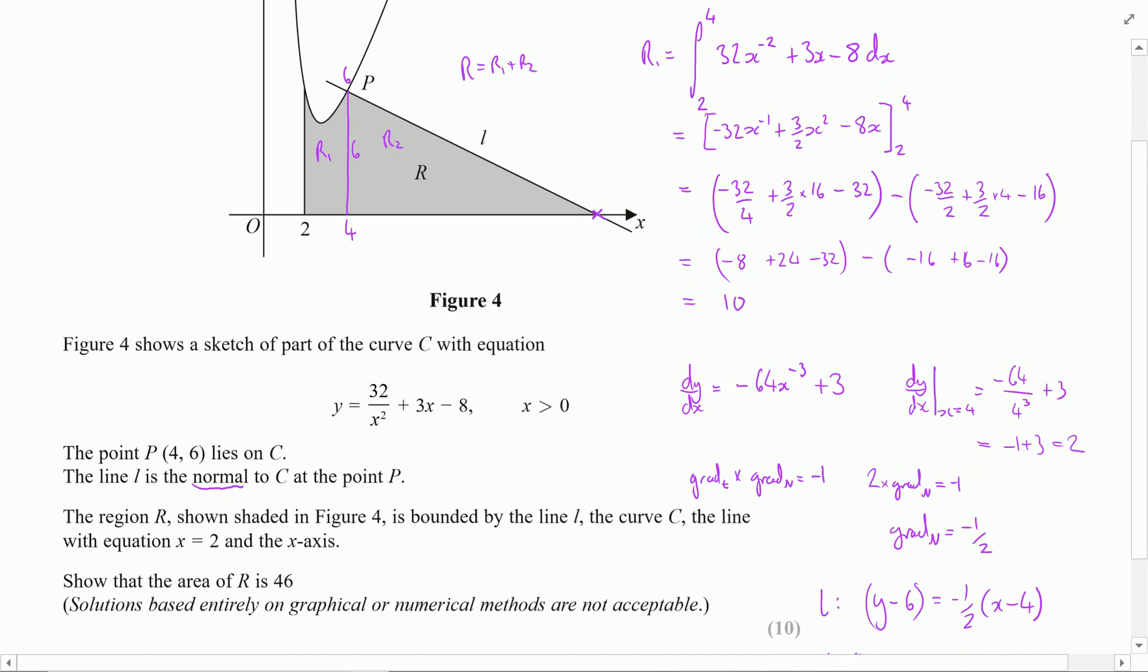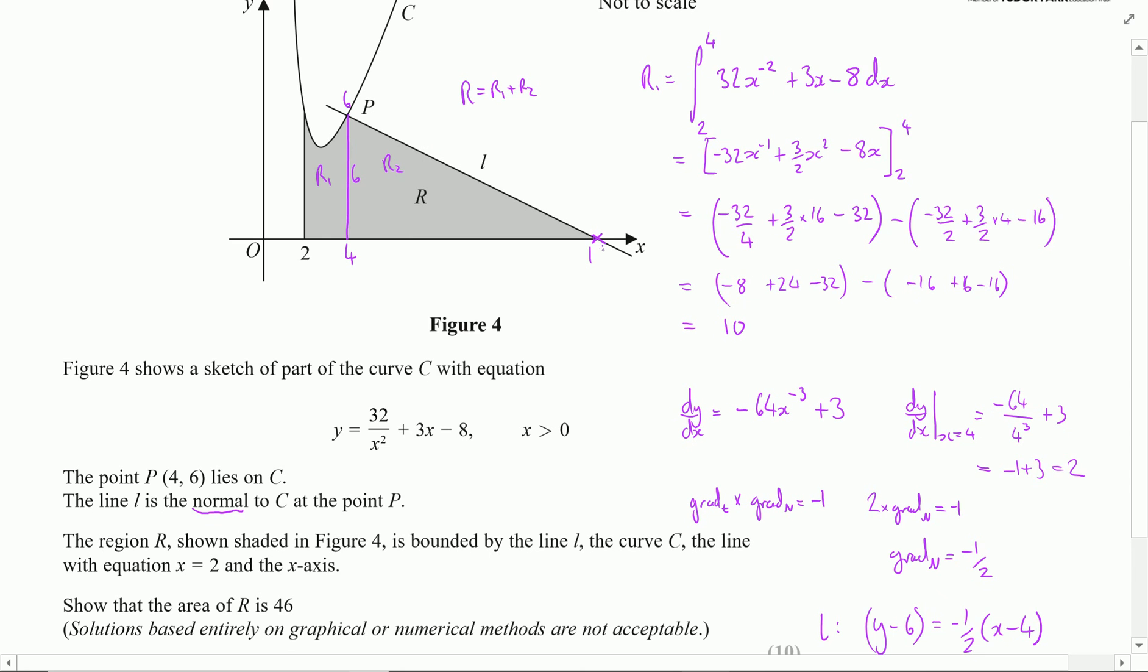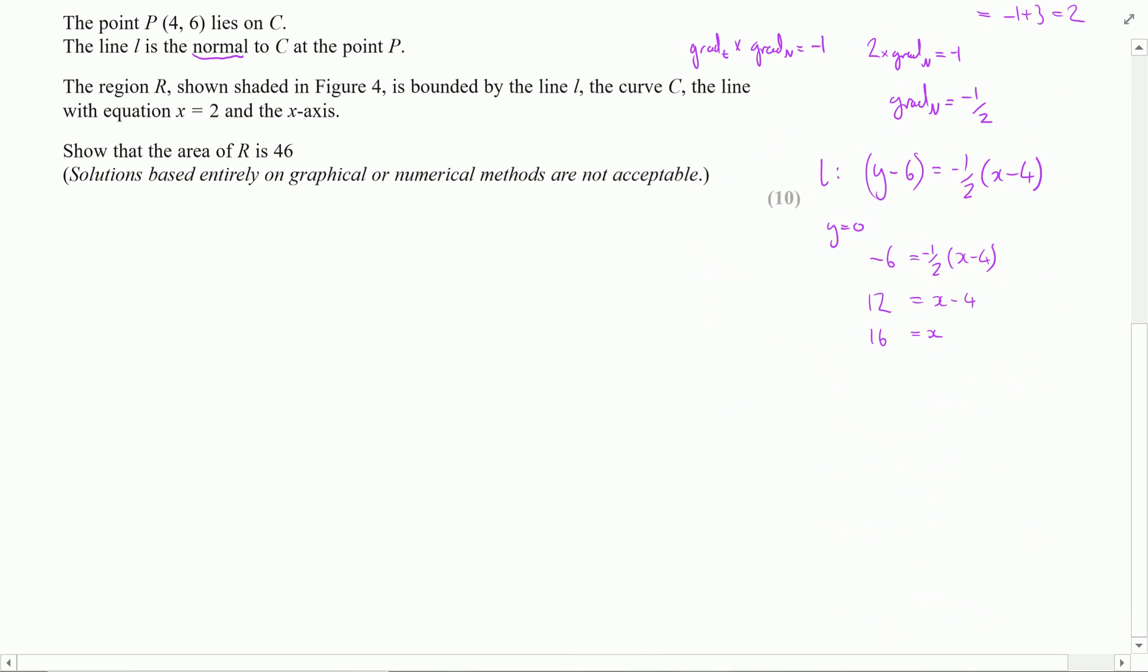Back to my diagram. I now know that this point here is 16. So what does that tell me? I've now got a triangle with a base from 4 to 16, so that distance is 12, and I know its height is 6.